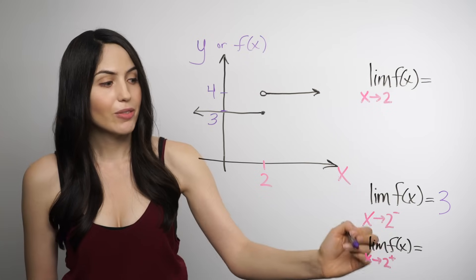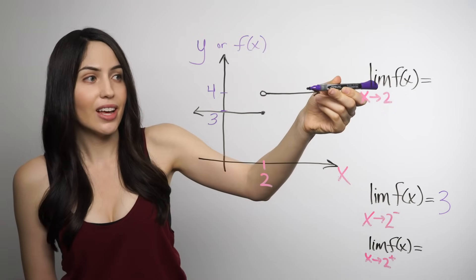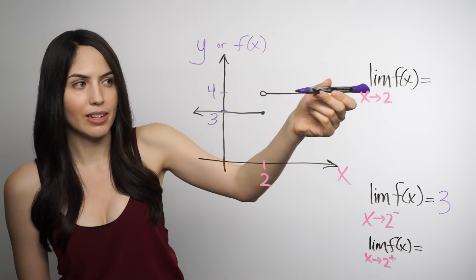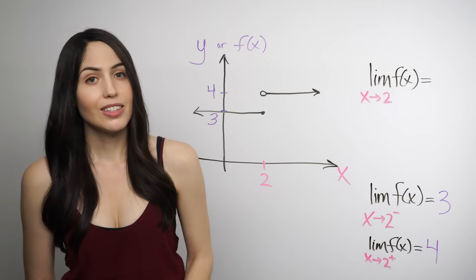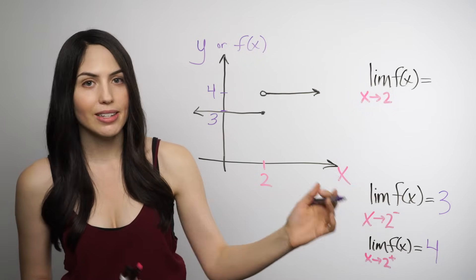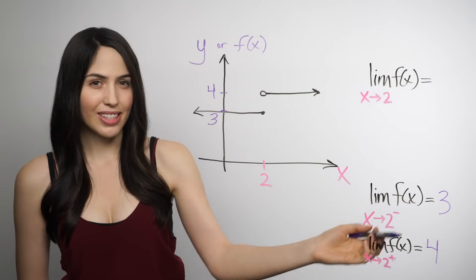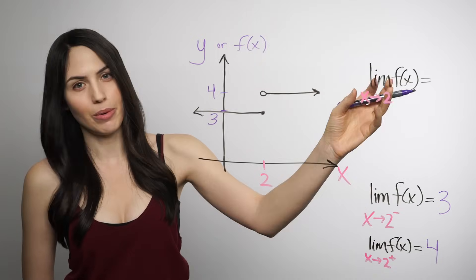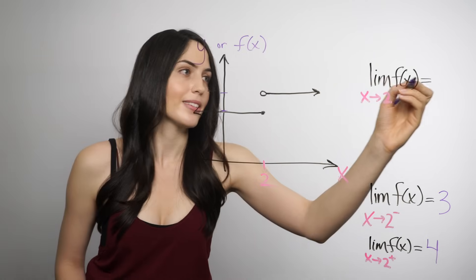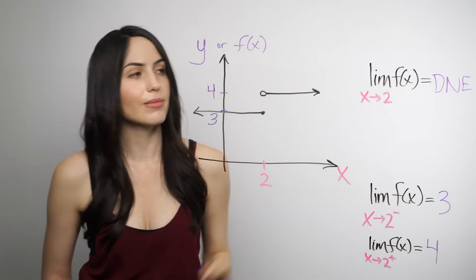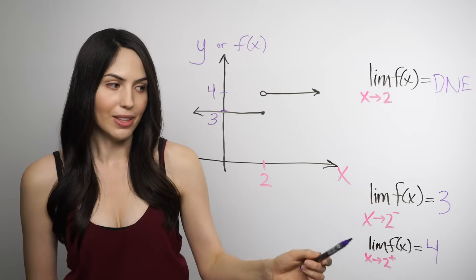And then from the right side, you approach from the right — approaching 2 from the right — on the graph, on the function. Everywhere here it's 4 for the y value. So even if you get really close, the limit looks like it's headed toward 4. If somebody asked you just for the left-sided or right-sided limit, you'd be done: the left is 3, the right is 4. But if someone is asking for the overall one, you have to compare them. Since they are not the same — 3 is not equal to 4 — we can't give a number for the overall limit. It does not exist. So we write DNE, or does not exist. Even though the overall limit did not exist, there were left-sided and right-sided limits we could write values for.